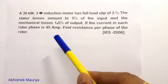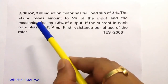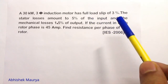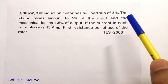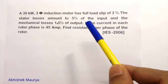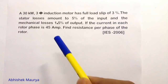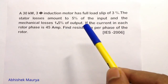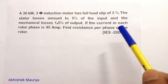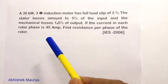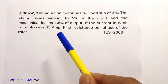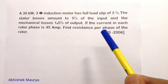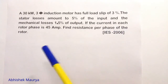Let us have a look at this problem. A 30 kilowatt three-phase induction motor has a full load slip of three percent. The stator losses amount to five percent of the input and the mechanical losses are 1.5 percent of the output.